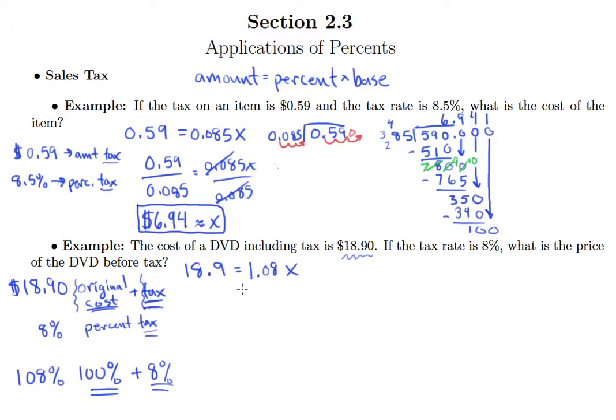Another thing you can do is maybe write out a sentence like we have in the past. You could say something like this: $18.90 is blank percent of the original price. And then maybe just put in 8%. So $18.90 is 8% of the original price. Well if it's only 8% of the original price that would indicate that the DVD cost a ton of money.